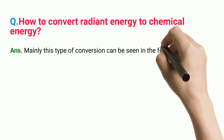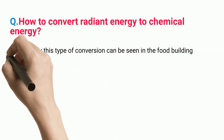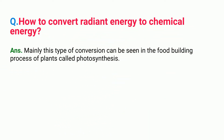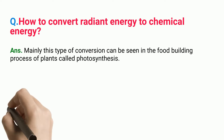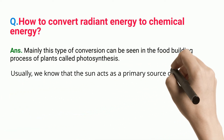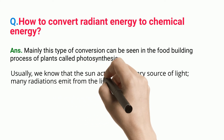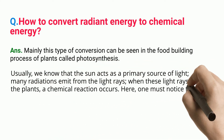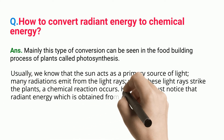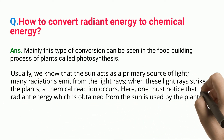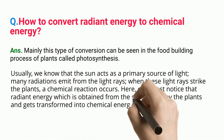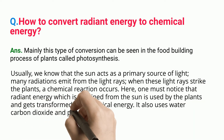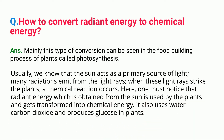This type of conversion can mainly be seen in the food-building process of plants called photosynthesis. The sun acts as a primary source of light, and many radiations emit from the light rays. When these light rays strike the plants, a chemical reaction occurs. The radiant energy obtained from the sun is used by the plants and gets transformed into chemical energy. It also uses water and carbon dioxide, and produces glucose in plants.